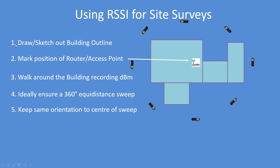This is how I went about it: I drew out the property boundaries, marked the position of the router, then walked around with the unit recording the signal strength in dBm, trying to keep reasonably equidistant points around a circle. I also tried to keep the orientation of the aerial or the unit always the same - ideally keeping the aerial orientation consistent so there are no polarization factors coming into play with the reception.